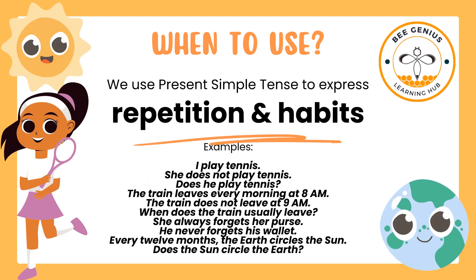Here are some examples of using present simple tense to express repetition and habits: I play tennis. She does not play tennis. Does he play tennis? The train leaves every morning at 8 a.m. The train does not leave at 9 a.m. When does the train usually leave? She always forgets her purse. He never forgets his wallet. Every 12 months the earth circles the sun. Does the sun circle the earth?